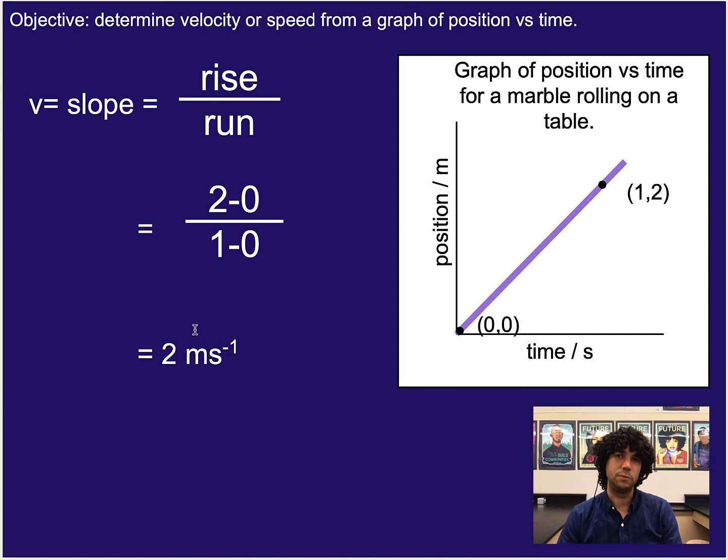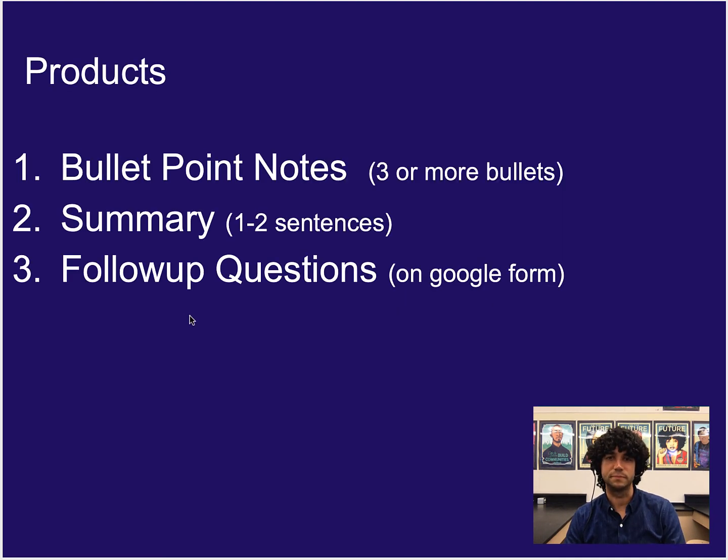That's it for me. Hopefully this helps you understand position-time graphs a little bit better and what constant velocity looks like on it. Look forward to in the future going through things that don't stay a constant velocity, but not in this unit. As always, three or more bullet points worth of notes, a one to two sentence summary, and if we have any follow-up questions on a Google form or elsewhere, you need to take care of those.